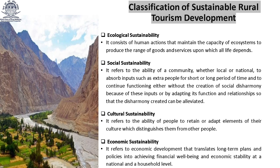Sustainable Rural Tourism Development can be broadly classified into four categories. The first is Ecological Sustainability. It consists of human actions that maintain the capacity of ecosystems to produce the range of goods and services upon which all life is dependent. It is also defined as the maintenance and restoration of the composition, structure and processes of ecosystems, including the diversity of plant and animal communities. For example, life below water — avoiding the use of plastic bags to keep the ocean clean.